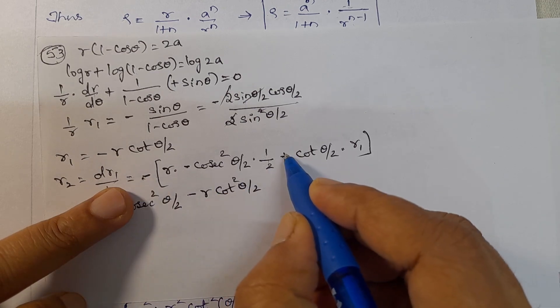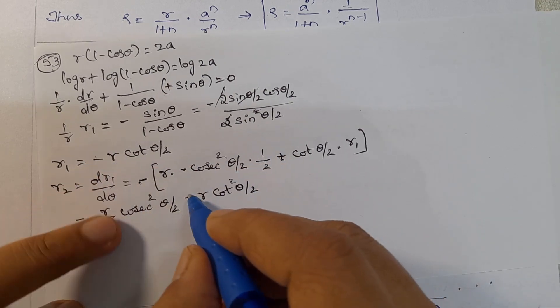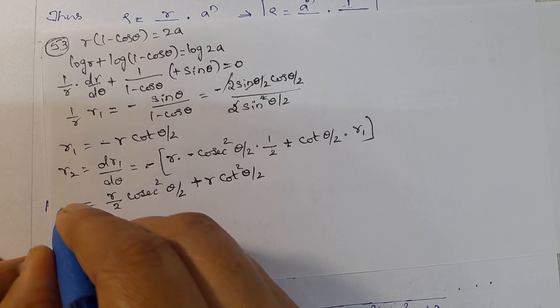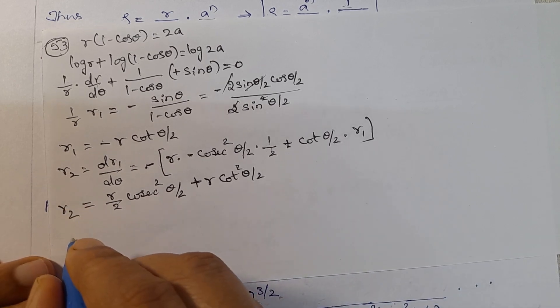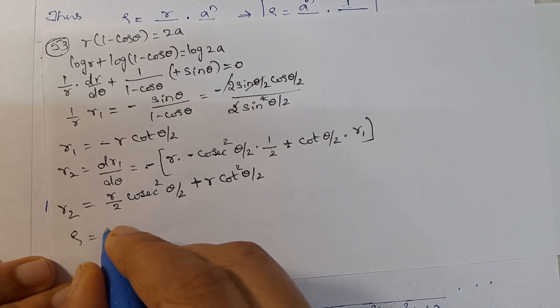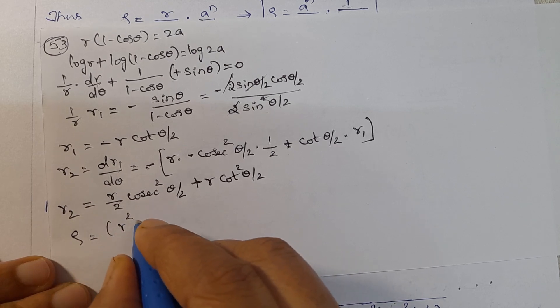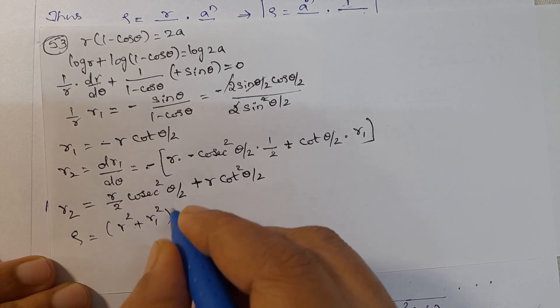So r2 = -r/2 × cosec²(θ/2) + cot(θ/2) × r1. Substituting r1 = -r cot(θ/2), this gives r2 = -r/2 cosec²(θ/2) + r cot²(θ/2).